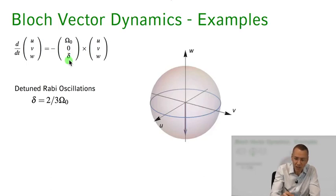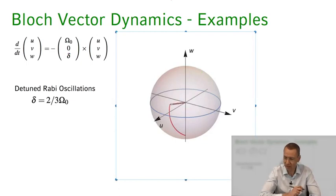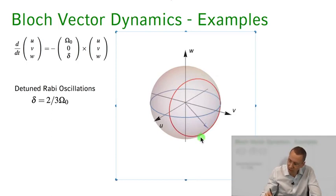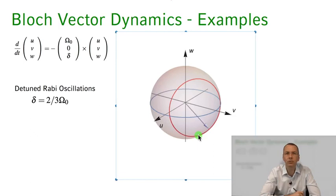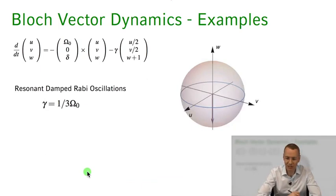Now let's look at the case where we're slightly detuned. If we're slightly detuned, the rotation axis tilts relative to the u-axis, and we expect detuned Rabi oscillations. Starting again with atoms in the ground state, you can indeed see that the axis around which we're rotating is tilted, and the atoms don't make it all the way up to the excited state. They come back to the ground state but never reach the north pole — exactly as we had for detuned Rabi oscillations, where the excited-state population oscillates at the generalized Rabi frequency but never reaches 1.